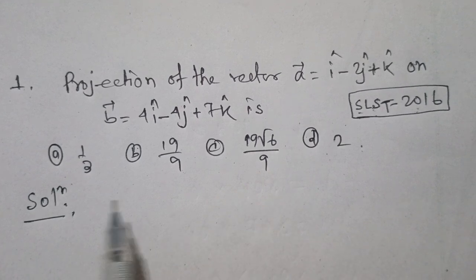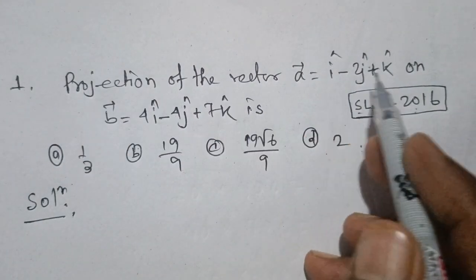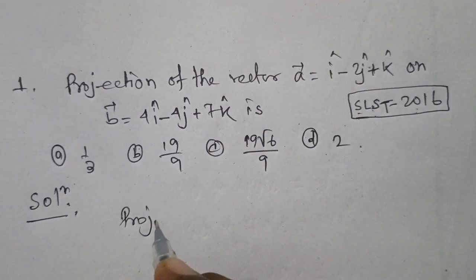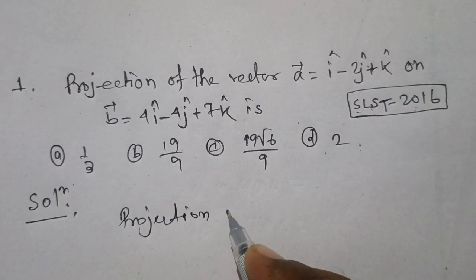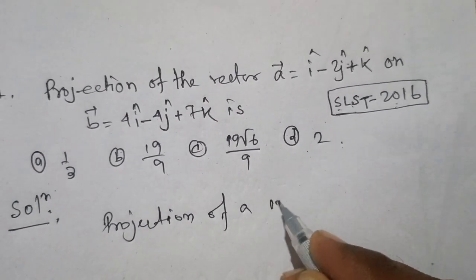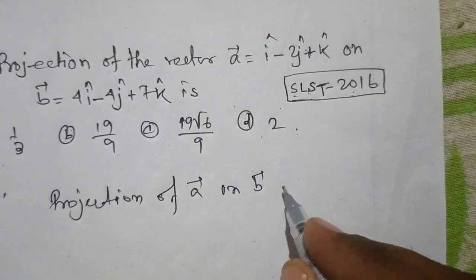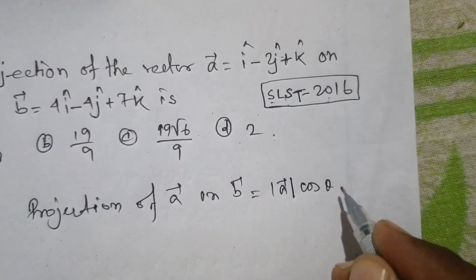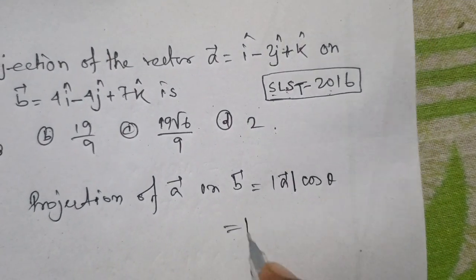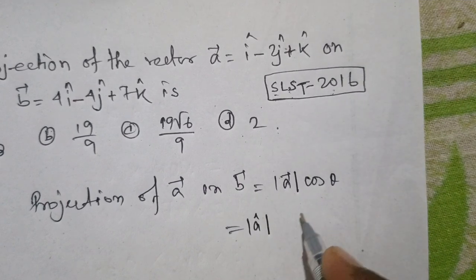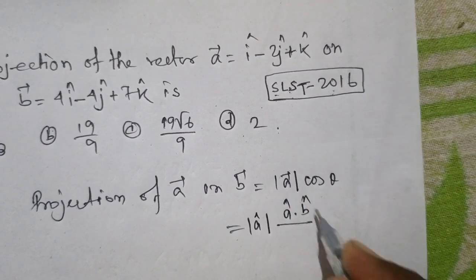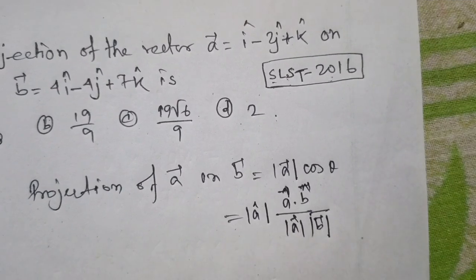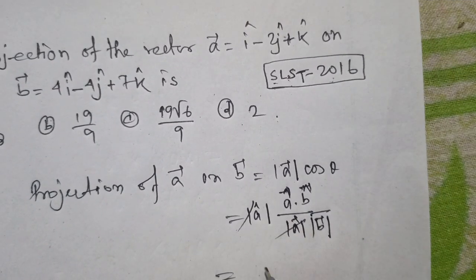The projection of vector a on b. The projection of a on vector b is equal to a vector cos theta. The vector is equal to a, b, a vector, a vector mode a, b. The vector is equal to a vector.